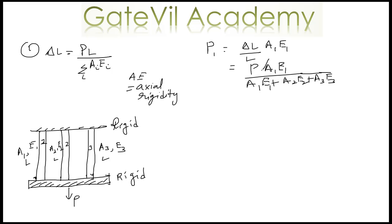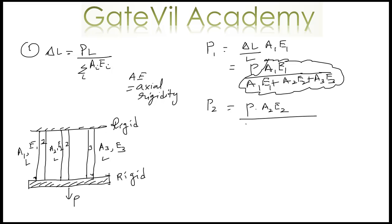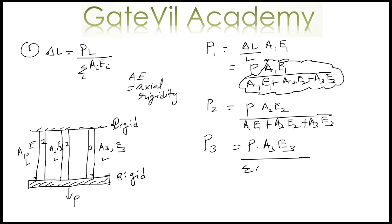The term AE is known as axial rigidity. From this we can see that the load shared by individual bars is in the ratio of their axial rigidity. Similarly, P2 equals P times A2 E2 divided by (A1 E1 plus A2 E2 plus A3 E3), and P3 equals P times A3 E3 divided by summation of Ai Ei for i equal to 1, 2, 3.